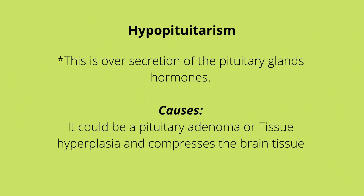With hyperpituiterism, we have an oversecretion of the pituitary gland hormones. The causes could be a pituitary adenoma, which is a benign tumor in the pituitary gland, or tissue hyperplasia, which is overgrowth of tissue. Either of these takes place in the anterior pituitary gland, and this could compress the brain tissue and cause increased secretion of growth hormone, prolactin, and ACTH.